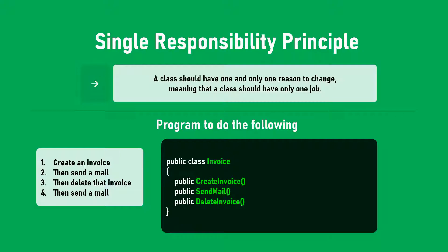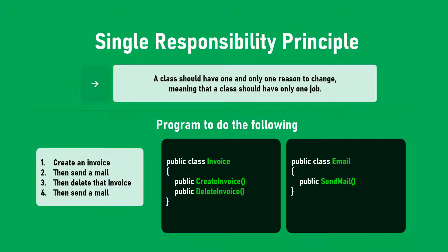What's wrong with this? The class name is Invoice, but it is dealing with both invoices and mail. sendMail is not something related to invoice — only createInvoice and deleteInvoice are related to invoice. So a good programmer will separate out the sendMail function and put it into a separate class Email, so that the Invoice class only deals with createInvoice and deleteInvoice, and the Email class deals with mail-related things like sendMail.